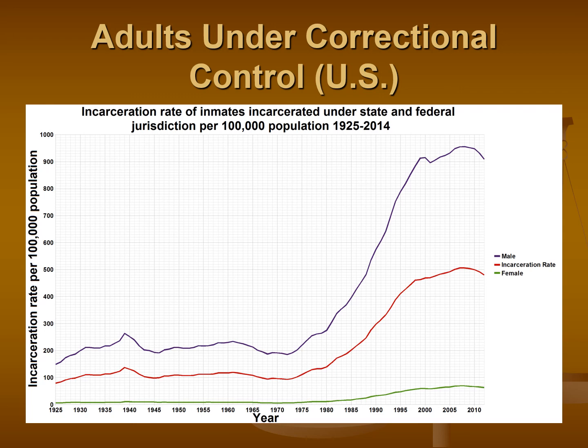From around 1925 all the way until almost 1975, it's a pretty steady line. There are a couple of blips right before 1940, but for the most part we see a pretty steady line for roughly 50 years where the incarceration rate in the United States was roughly 100 out of every 100,000 adults. We'll talk later about why it remained so steady for 50 years straight.